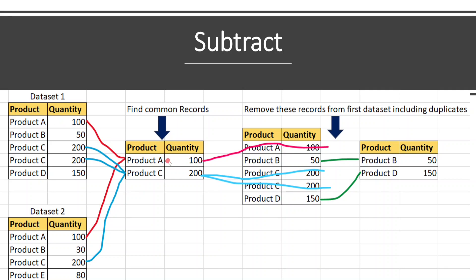In the first data frame, product A 100 is part of the common records, so it will be removed. Product P 50 is not part of the common records, so it will be retained. Product C 200 is part of the common records, so it will be eliminated. The second product C 200 is also part of the common records, so it will also be removed. Product T 150 is not part of the common records, so it will be retained. The subtract function gives an output of product P 50 and product T 150 — these are the records from data set 1 not present in data set 2.